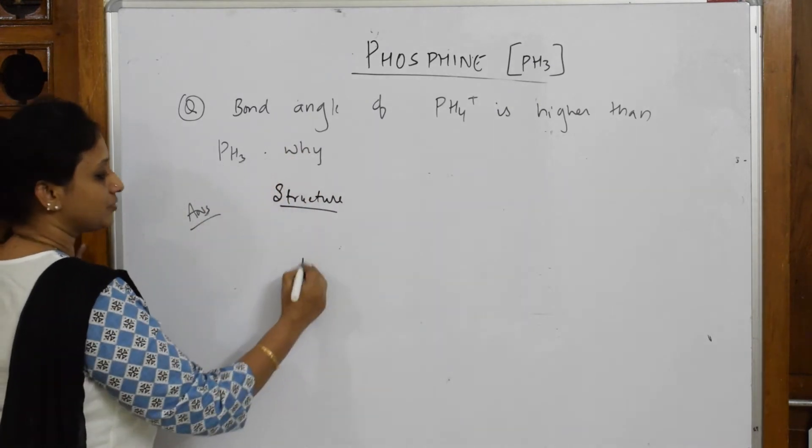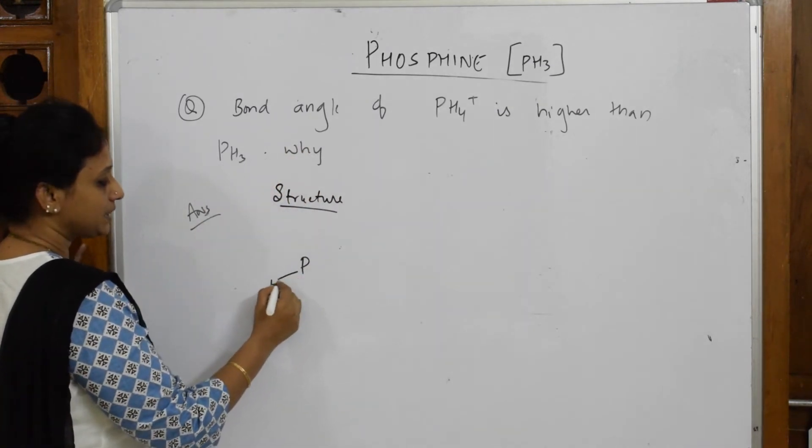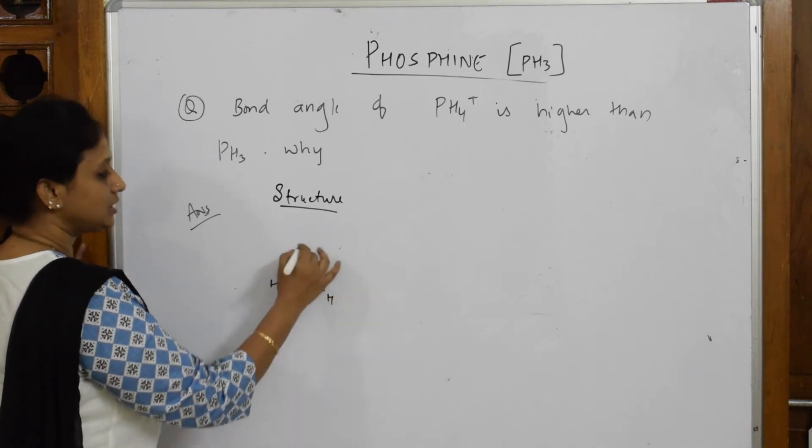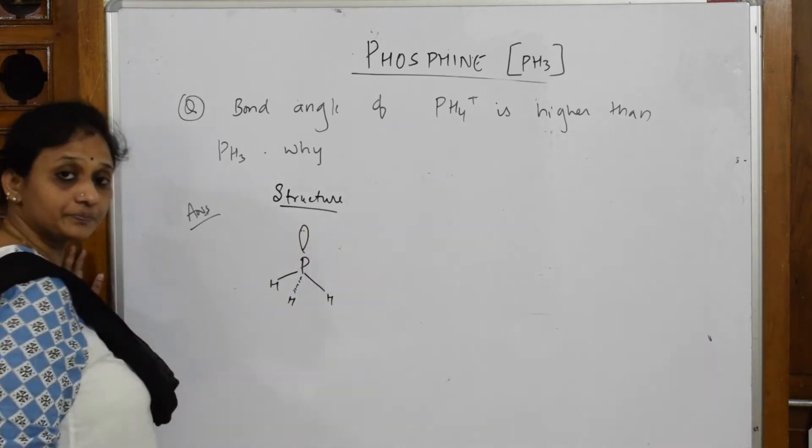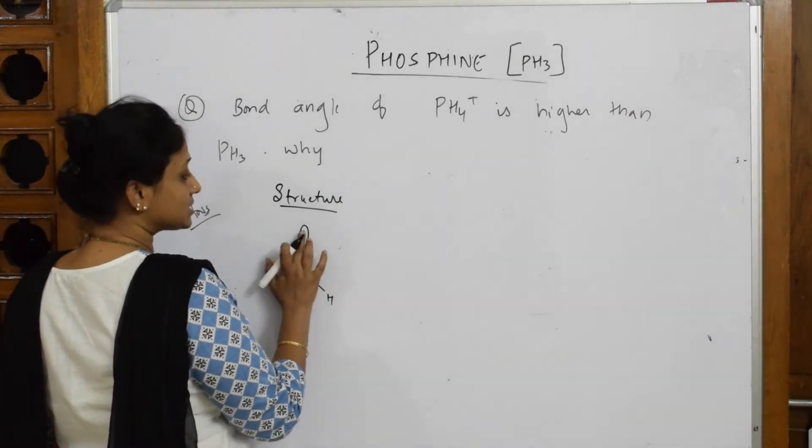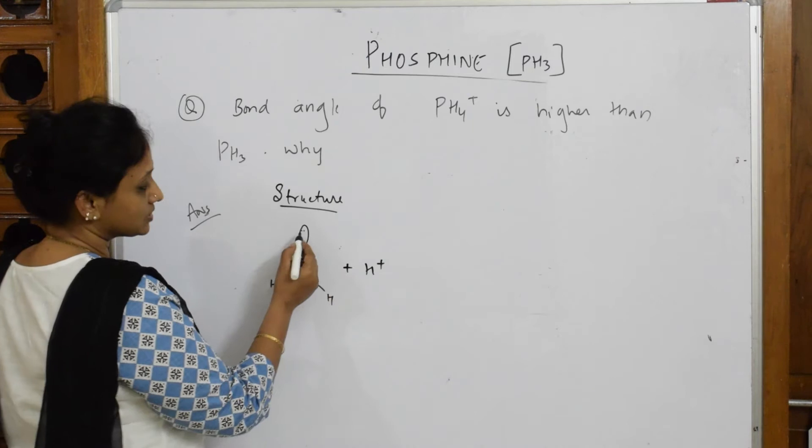Let us draw phosphine. Phosphine is PH3 with three hydrogens and a lone pair of electrons. Now, this phosphine being a Lewis base is going to donate an electron to H+.